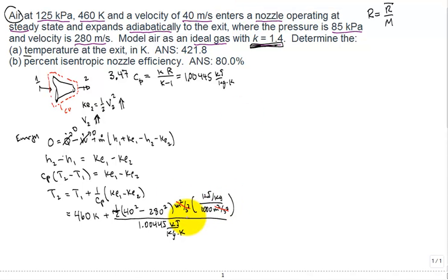Notice the units: meter squared per second squared go to kilojoules per kilogram. You're left with kelvin on both of those, and you get the exit temperature coming in at 421.8 kelvin. Done with part A.